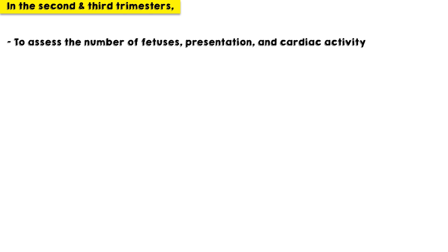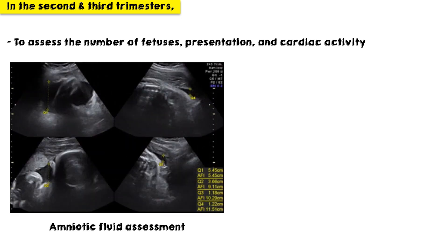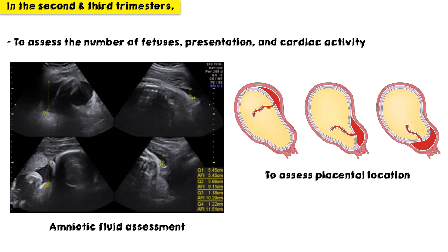Major indications for ultrasound scanning during the second and third trimesters include the following: to assess the number of fetuses, presentation, and cardiac activity; amniotic fluid assessment; and to assess the placental location and relationship to the internal cervical os.